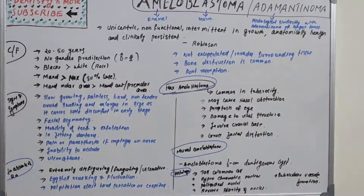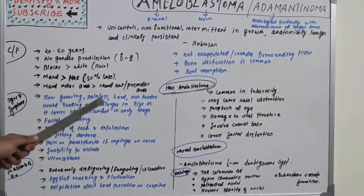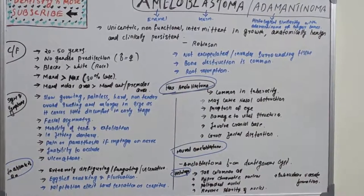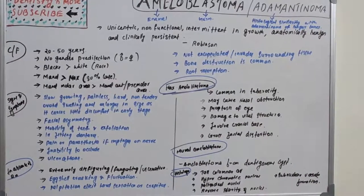Mandibular molar areas are more prone to ameloblastoma compared to anterior or premolar areas. It is a slow-growing, painless, hard, non-tender ovoid swelling which enlarges in size causing little discomfort in the early stage. At the early stage it is very asymptomatic — it does not cause pain or other symptoms — and slowly enlarges to become a large ovoid mass.